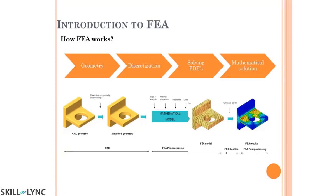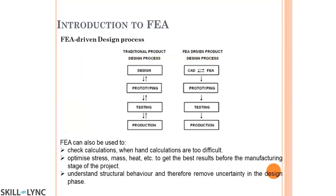The color plot represents the desired output parameter — it could be stress, displacement, or temperature. You specify your load and location, and the simulation tells you whether the component will fail or not. That is essentially how FEA works.